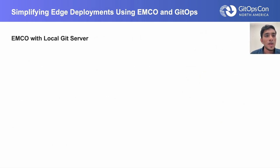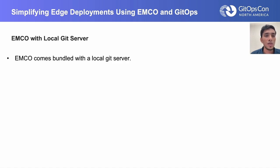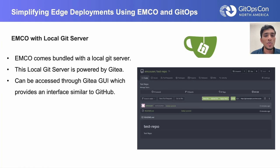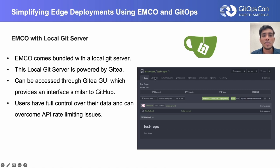The Git server is one of the important components of the GitOps flow. While we typically depend on servers like GitHub or GitLab, it's also desirable to have a local Git server — and EMCO comes bundled with one. This Git server is powered by Gitea, with a UI very similar to GitHub. One of the best advantages of having your own Git server is full control over data, ensuring no privacy leaks. You also avoid API rate limiting issues that can occur with services like GitHub.